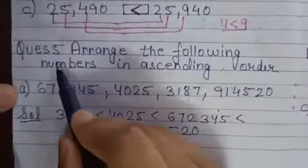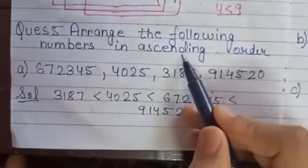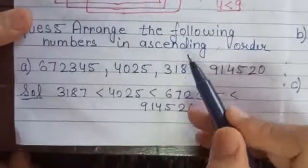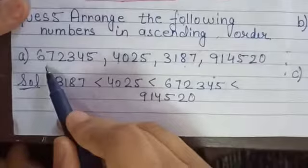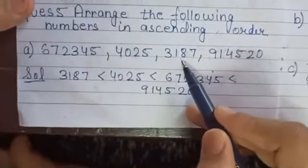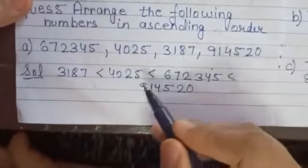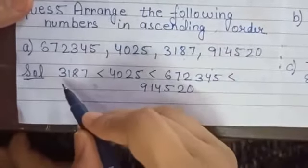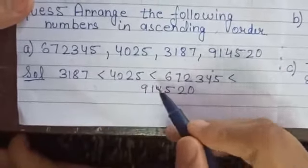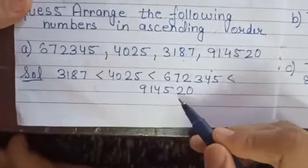Question 5: arrange the following numbers in ascending order — smallest to greatest. Part A: 6,72,345; 4,025; 3,187; 9,14,520. In ascending order: 3,187 then 4,025 then 6,72,345 then 9,14,520.